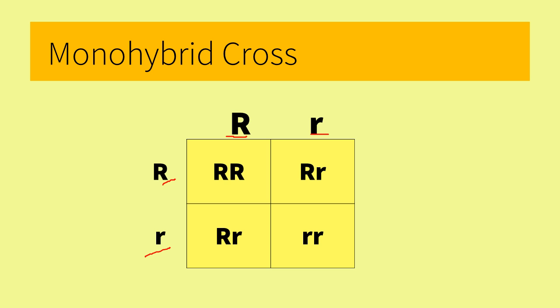These letters stand for the products of meiosis. The letters on the top represent the gametes from one parent, and the letters on the side represent the gametes of the other parent. A monohybrid organism will produce gametes that have a 50% chance of having either allele.